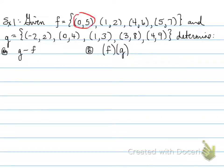So the first one, (0,5), has a matching one in g with (0,4). (1,2) has a matching one with (1,3). So again, what are you looking at? You're looking at the x-coordinates. They have the same x-coordinates, so we can manipulate the y-coordinates.